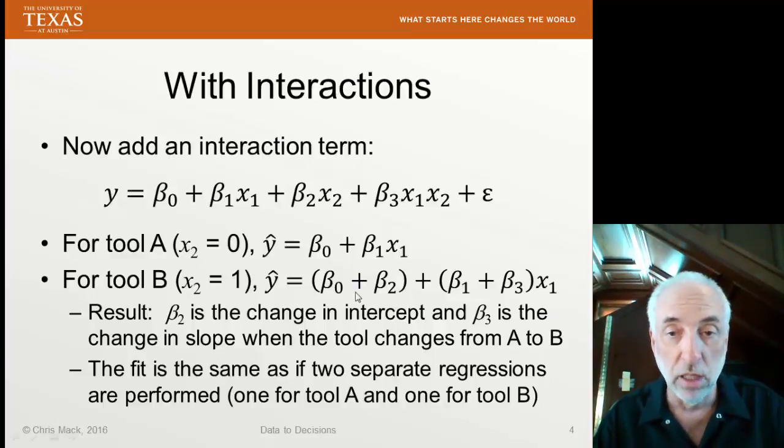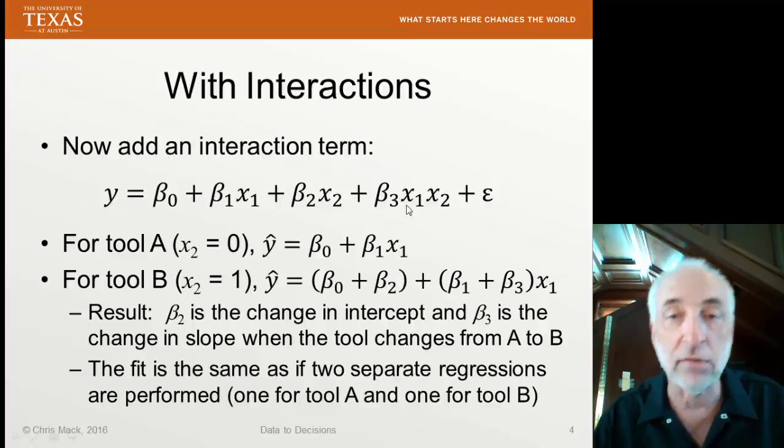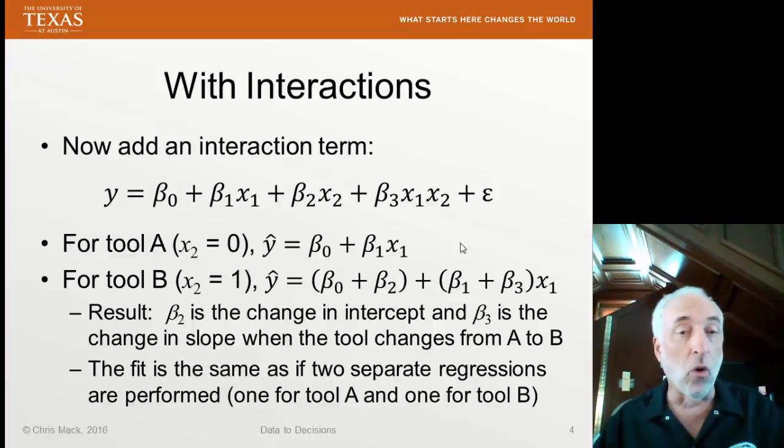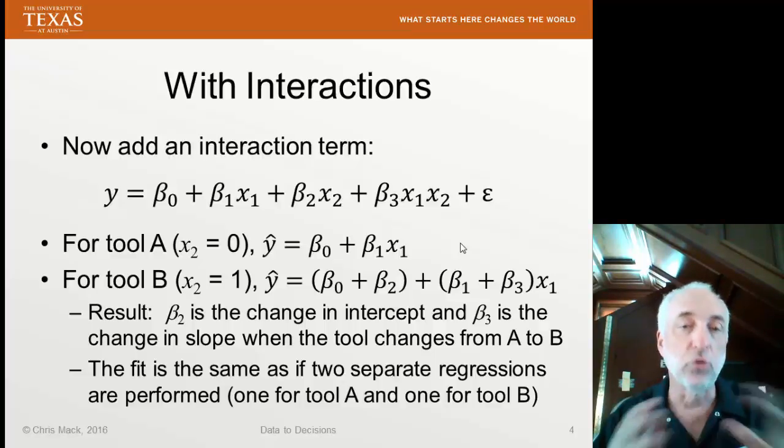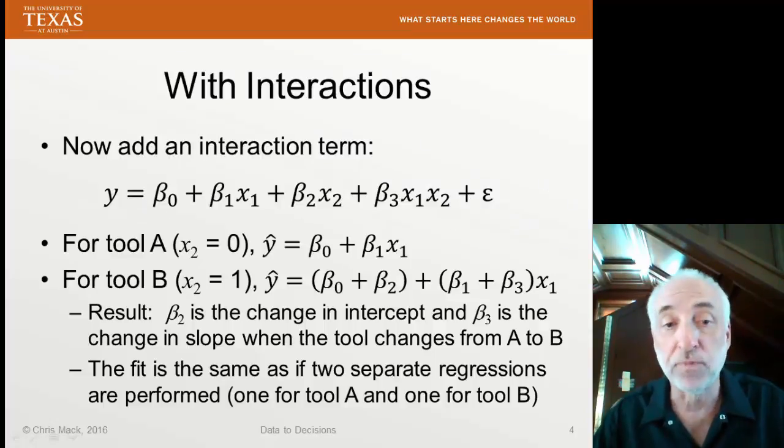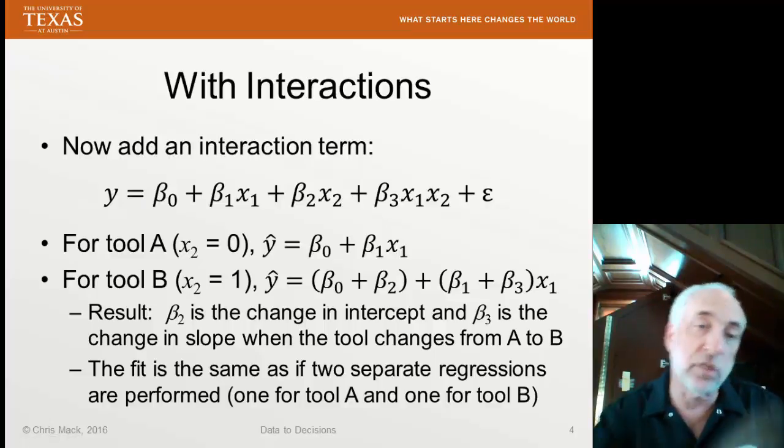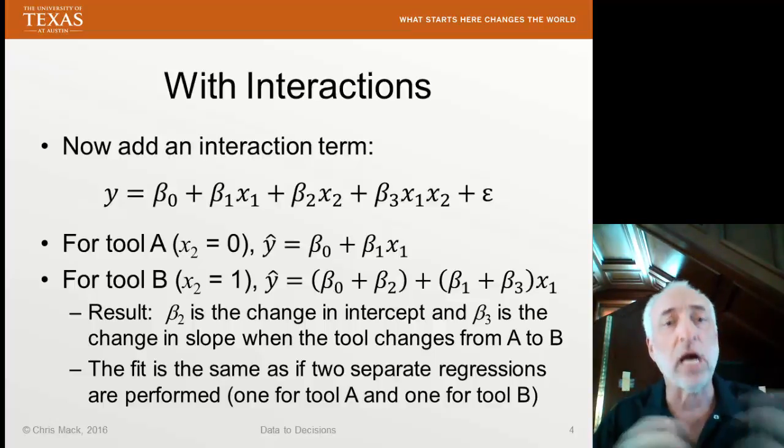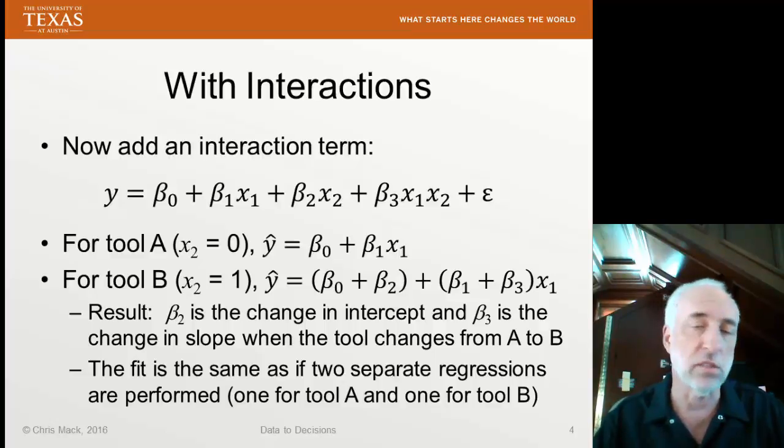Maybe β2 is zero, but I do get a change in slope. So maybe only the interaction term is significant. Notice that if I fit all of the data that I have for both tool A and tool B to this model with the indicator variable and the interaction term both, I get the exact same result as if I were to separate the data into two groups, a tool A group and a tool B group, and fit two separate models. Same results. Of course, if you have lots of different indicator variables going on, it's sometimes a lot more convenient to do everything at once.